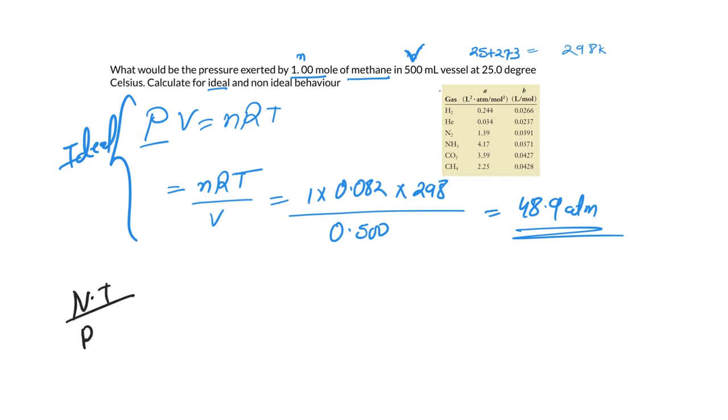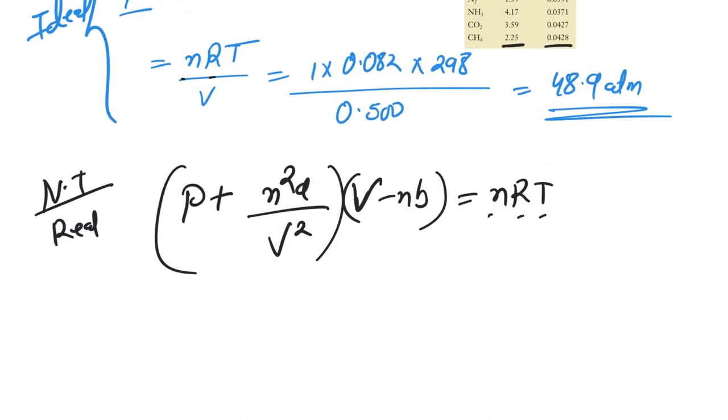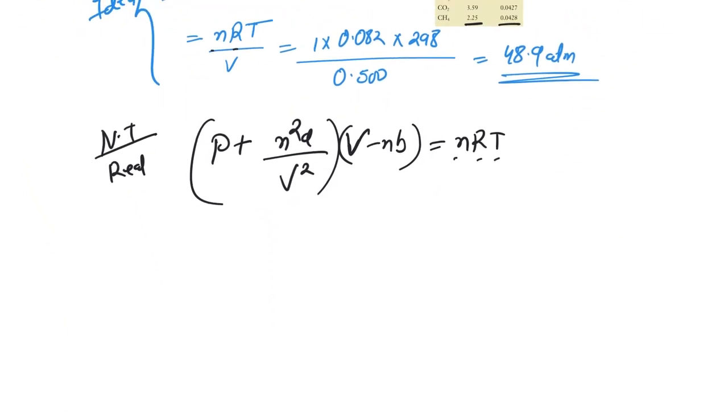Now let's talk about the non-ideal behavior, or we can say real behavior. Here remember our equation would change. So what's the equation? P plus n squared a upon v squared times V minus nb equals nRT. You already have this as the same. Now you need to find the values of a and b, and a and b values are given here. From this table you need to find out the value. This particular question was about methane. You can see that methane values a and b, so let's use these values.